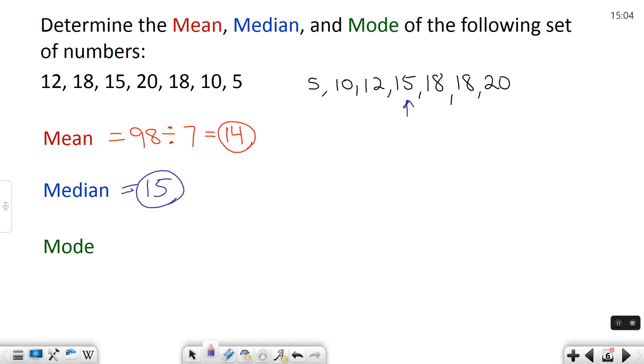And that one's really easy. Mode is just as easy. You look for the number that occurs the most. In this case there are two 18s and everything else only shows up once. So that means 18 has to be the mode.